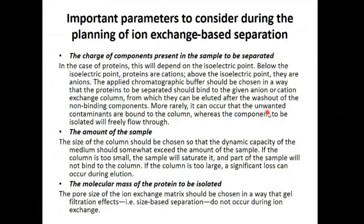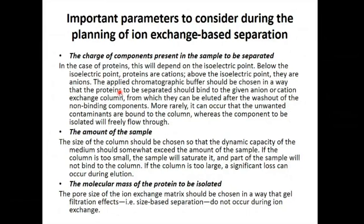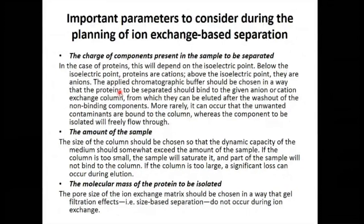After binding, proteins can be eluted after the washout of the non-binding components. More rarely, unwanted contaminants are bound to the column while the components to be separated flow freely through. We adjust the pH so that the components to be separated retain on the column. When analyzing biological materials like a blood plasma sample, small ions like carbonate, potassium, and chloride ions should not bind to the stationary phase - they should flow freely, so the pH is adjusted accordingly.